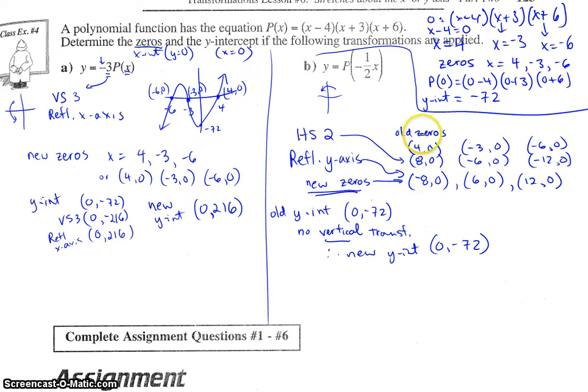So let's see what it affects. If we take our old zeros—(4, 0), (-3, 0), (-6, 0)—and we horizontally stretch by a factor of 2, our x-coordinates are going to get multiplied by 2. So 4 becomes 8, etc. Then, we reflect in the y-axis, and the x's would go opposite signs. So there's our new zeros.